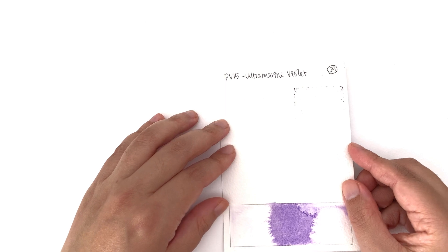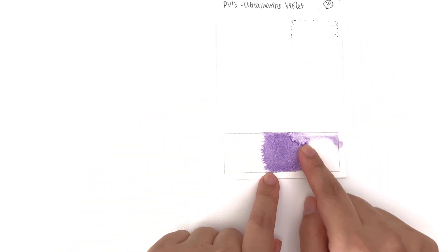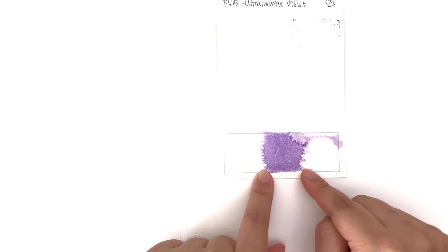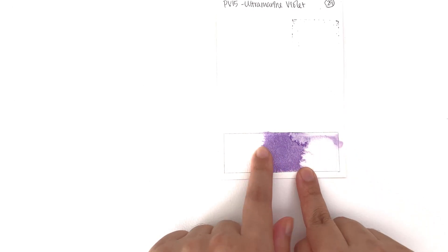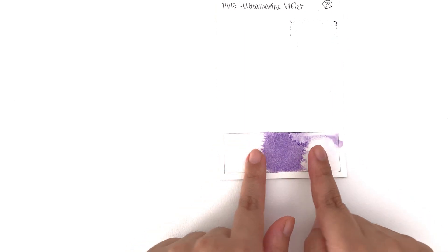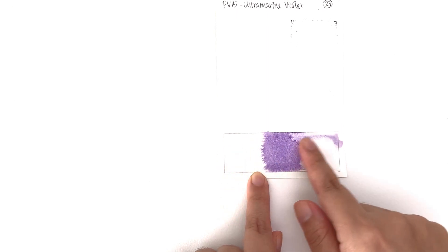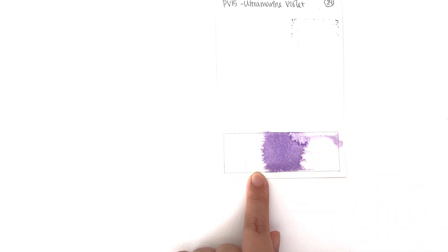It is made with PV15 which is the ultramarine violet. In terms of dispersion, we have a pretty big mass tone dispersion happening and then a little bit of halo coming off to the side. It's not like the whole thing though, it's just little arms of color shooting off from the main mass tone.